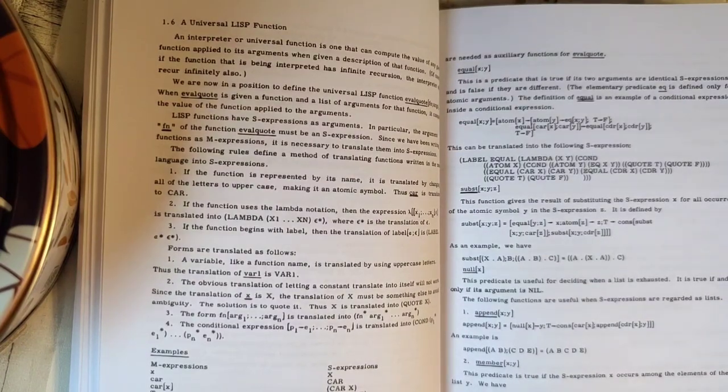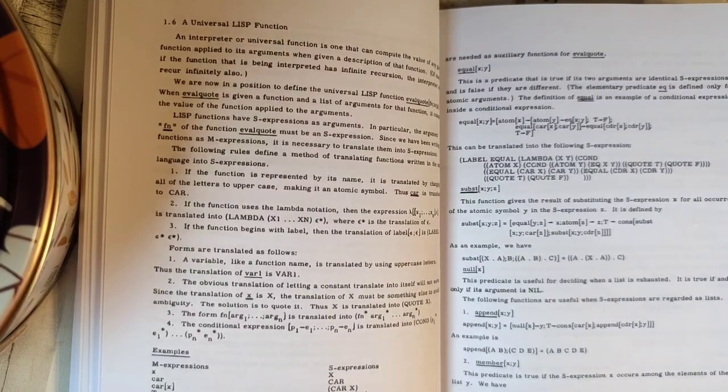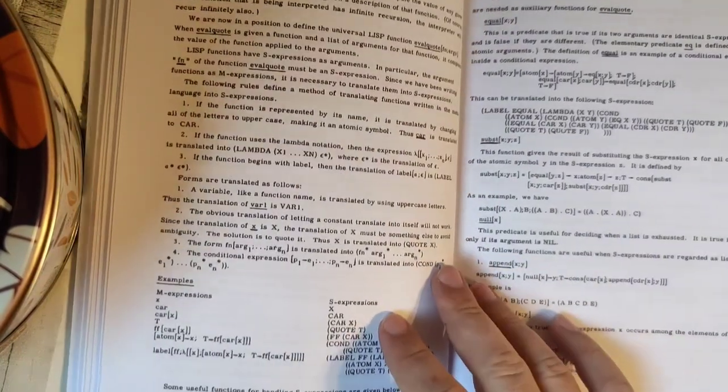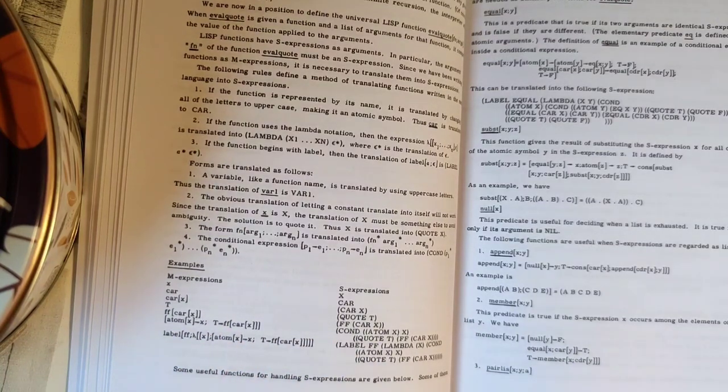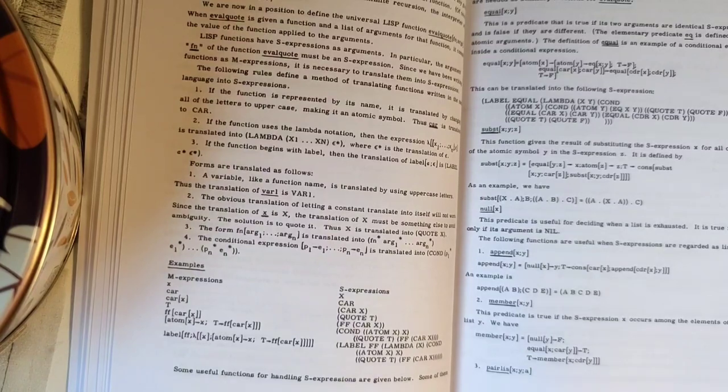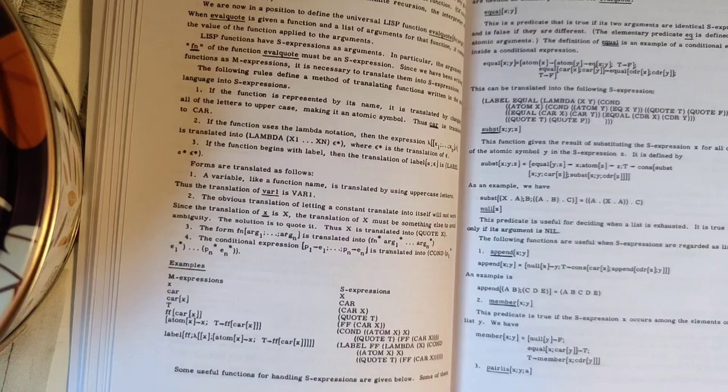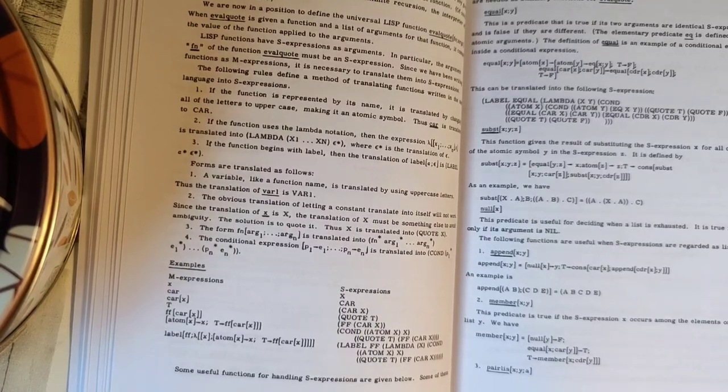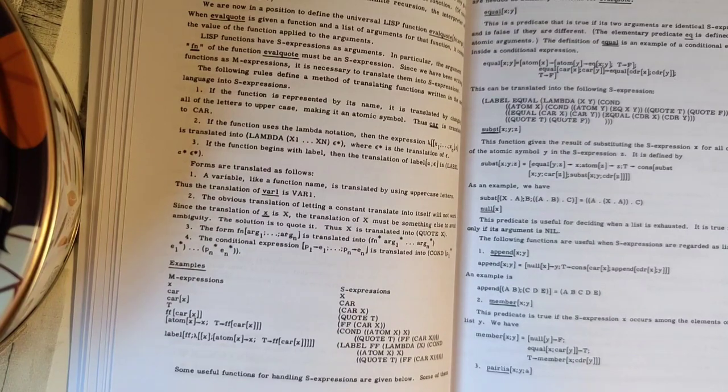So, they introduce here the label facility, which is something like a let for functions, and they explain you how that can be used in order to name functions so that you can use them afterwards in defining recursive functions, and they have it here for the equal definition. They also go a little bit into explaining to you how to translate M expressions into S expressions.